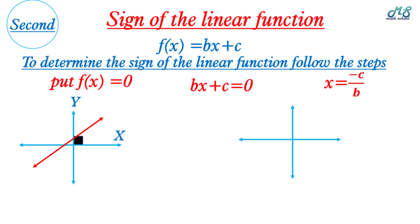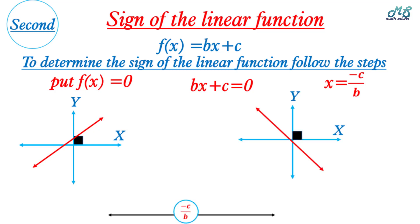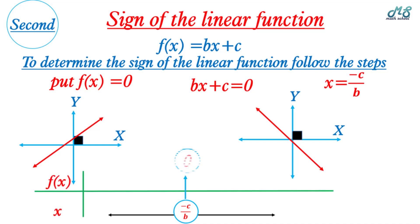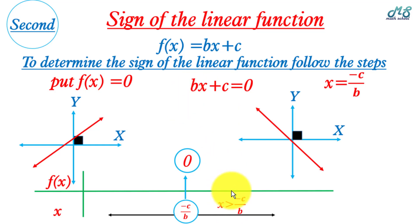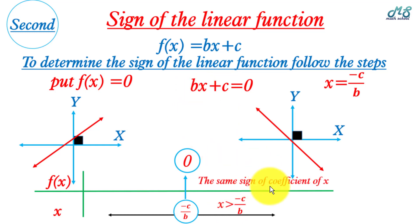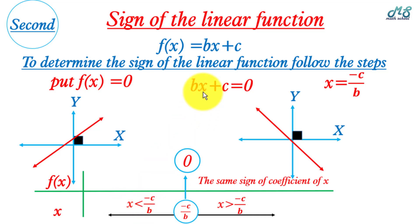To find the sign of the function: at x = -c/b, f(x) equals zero. At the right, where x is greater than -c/b, the sign of the function is the same as the sign of the coefficient of x, which is b — if b is positive it will be positive, if negative it will be negative. At the left, where x is less than -c/b, the sign of the function is the opposite sign of b.